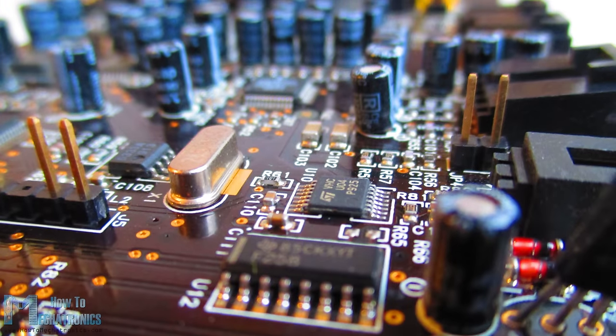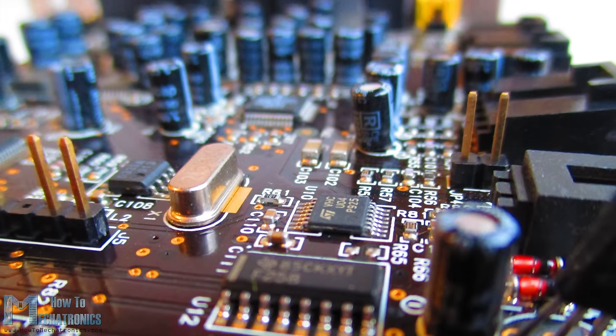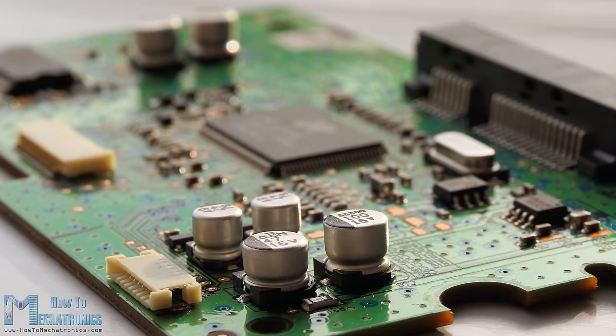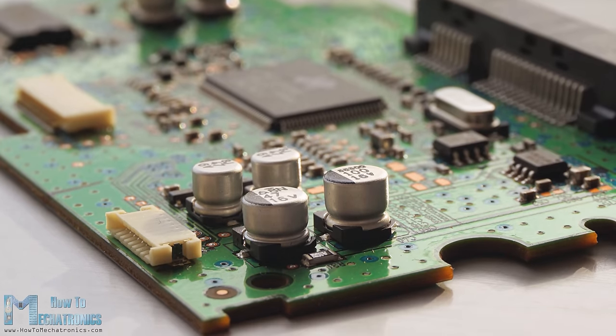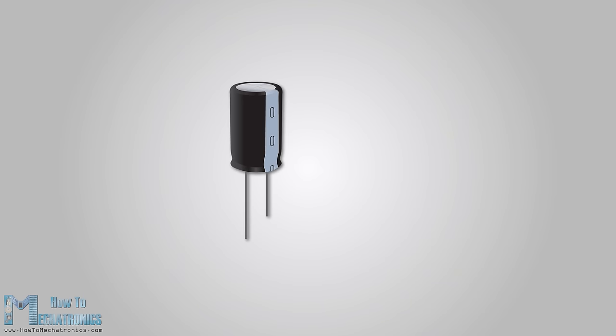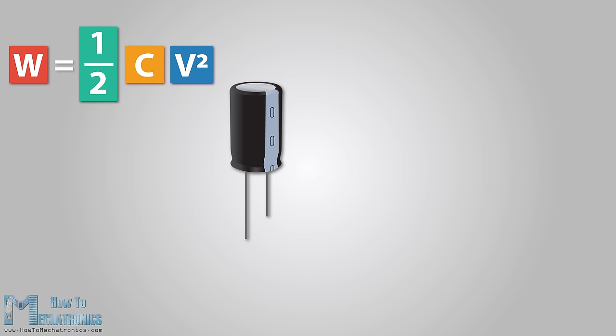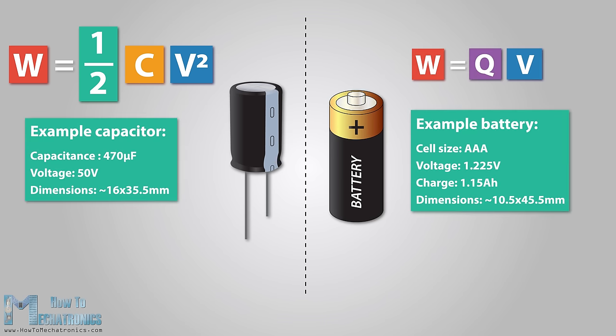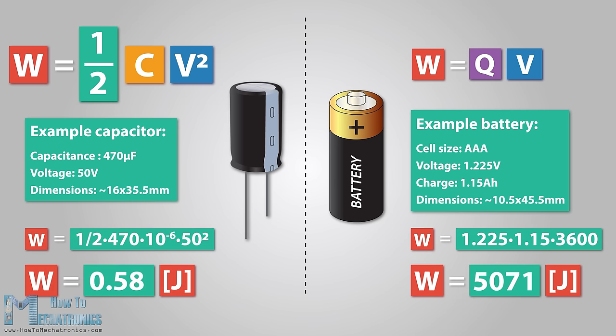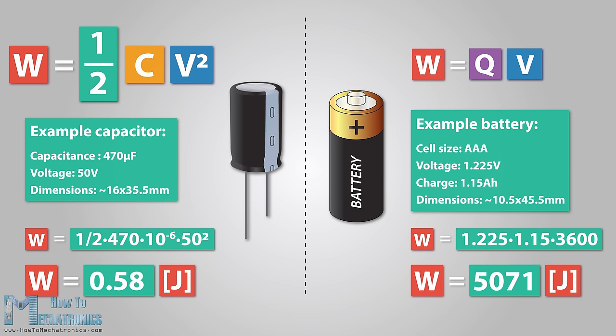There is almost no circuit which doesn't have a capacitor on it, and along with resistors and inductors they are the basic passive components that we use in electronics. A capacitor is a device capable of storing energy in a form of electric charge. Compared to a same size battery, a capacitor can store much smaller amount of energy, around 10,000 times smaller, but useful enough for so many circuit designs.